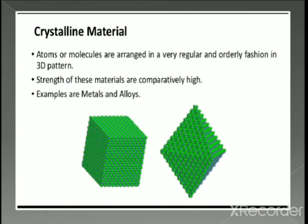In the previous class you learned about crystalline and amorphous solids. In crystalline solids, atoms or molecules are arranged in a very regular and orderly fashion in a three-dimensional pattern, and the strength of these materials is comparatively high. Examples are metals and alloys. The main characteristic is a regular and repeating pattern of constituent particles. If this arrangement is represented diagrammatically, with each particle depicted as a point, the arrangement is called the crystal lattice — a regular three-dimensional arrangement of points in space.